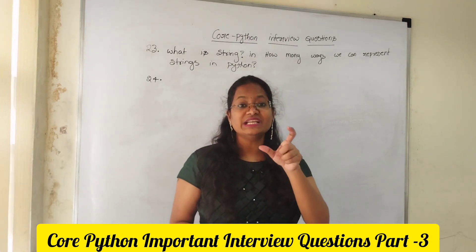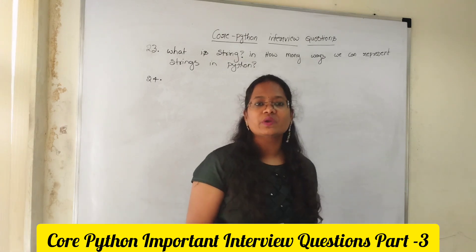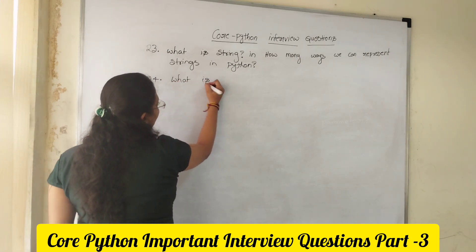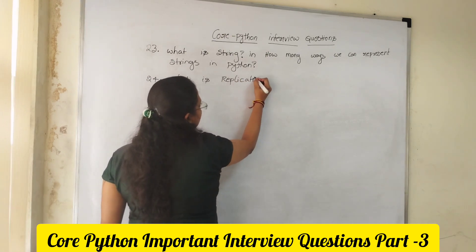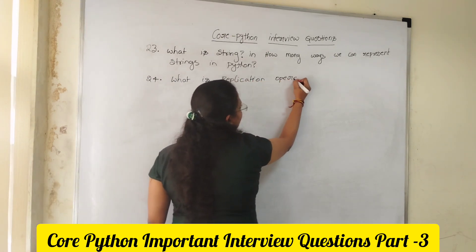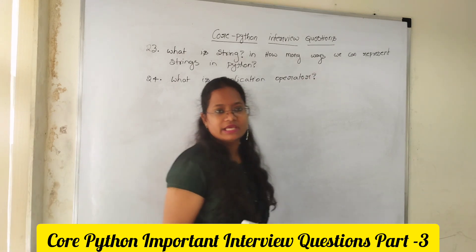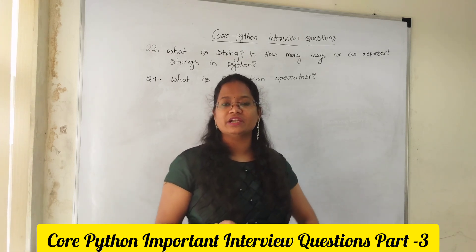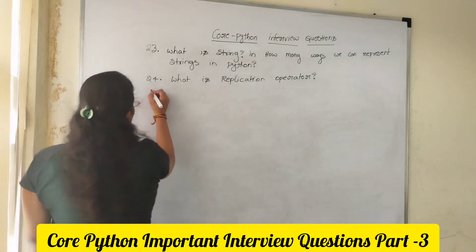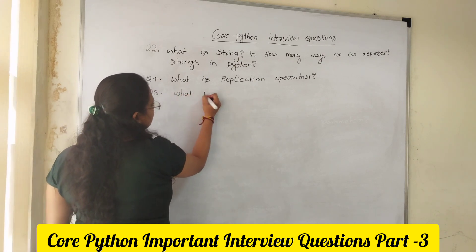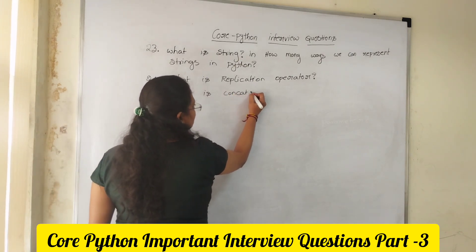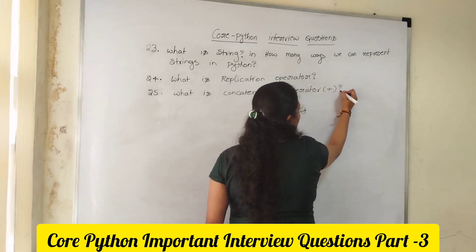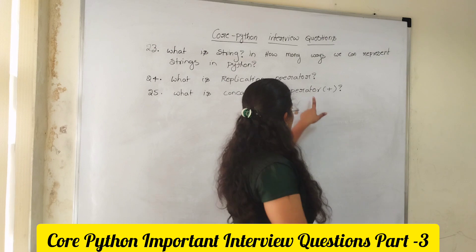We are using the replication operator. What is the replication operator? Replication is represented with a star symbol — for example, 'India * 5' means India will be printed five times. That is the replication operator. The 25th question is: what is the concatenation operator? Concatenation is represented with the plus symbol.